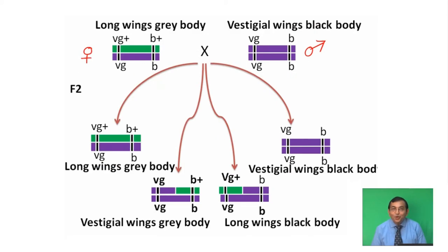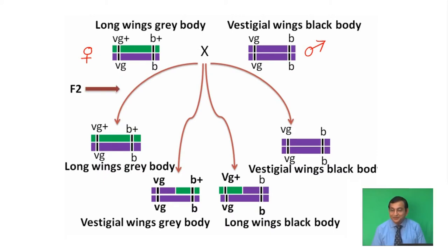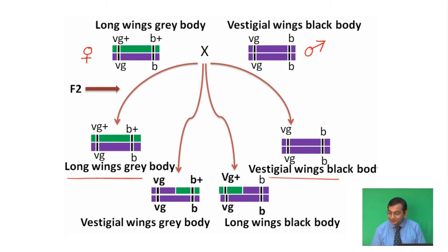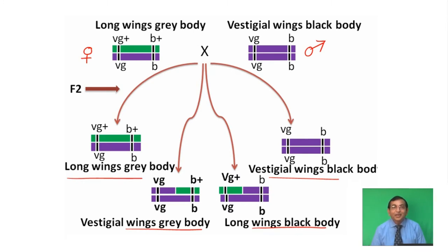Now, this long wings, grey body female of the F1 generation is test crossed with the double recessive vestigial wing, black body. In the F2 generation, we obtained long wings and black body. These are two parental types. There are also two recombinant types obtained: vestigial wings, grey body and long wings, black body. So there are two parental types and two recombinant types in the F2 generation.